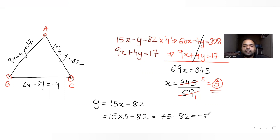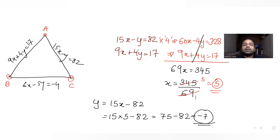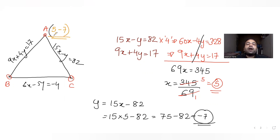Once I get x equal to 5, I find y from 15x minus 82, so 15 times 5 is 75 minus 82, which gives y equal to minus 7. So the coordinates of vertex A are (5, minus 7).